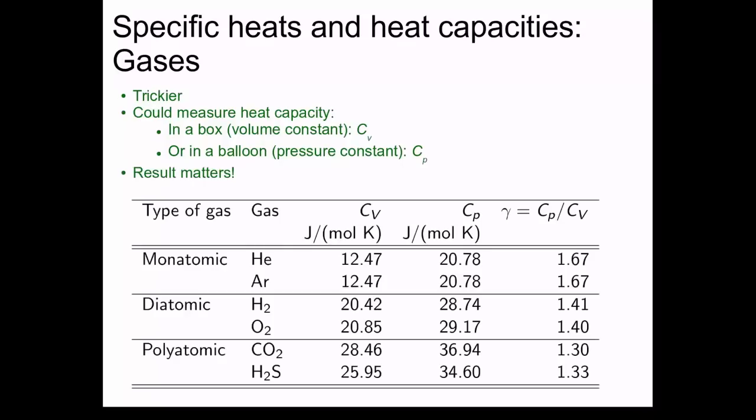The result does matter. You get different results whether you measure things in terms of constant volume or in terms of constant pressure. Here's a table for these heat capacities for different gases. We can see some interesting patterns in this table. We see that monatomic gases tend to have C sub V of approximately 12.47.